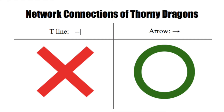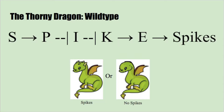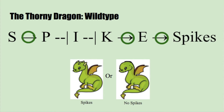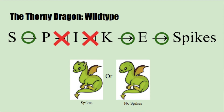Think of the network connections as X's and O's. X's being closed, like inhibitors, and O's being open, like activators. There are five genes in the thorny dragon's developmental network that will help us determine if a dragon will have spikes or not. The genes are the letters S, P, I, K, and E. We can put a green circle over the arrows indicating that these are the activating genes. Now we can put red X's over the others to indicate inhibition.